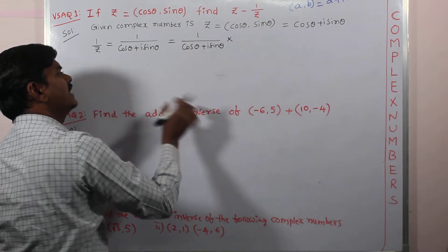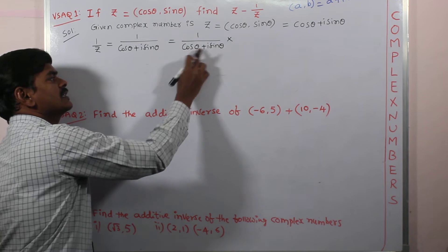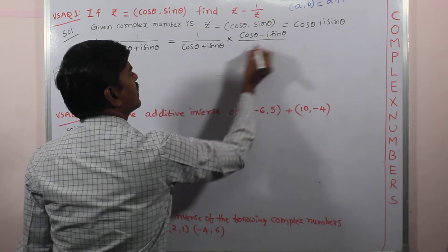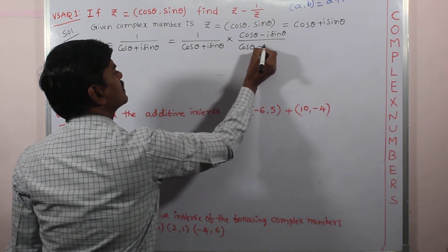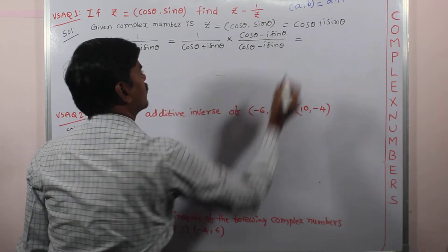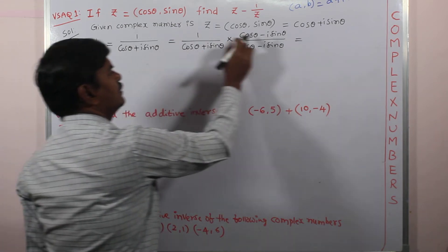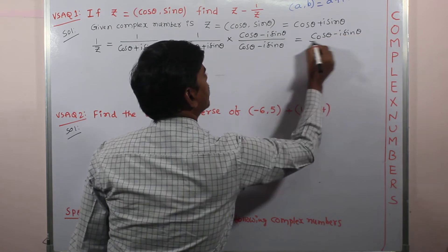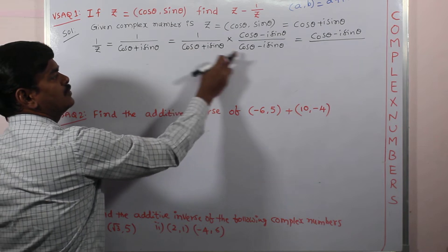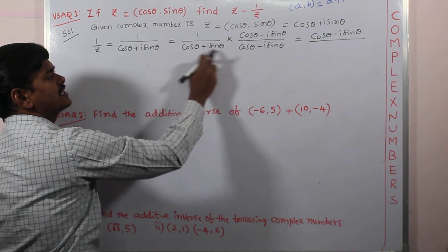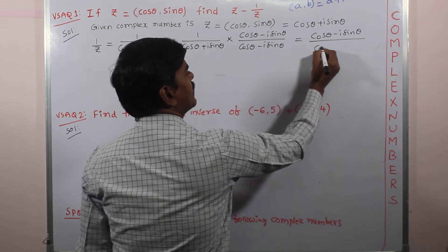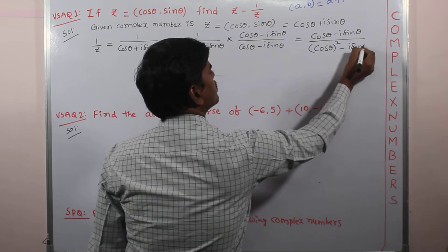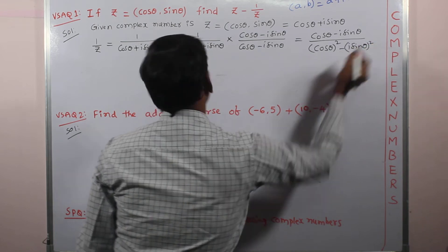Multiplying and dividing by its conjugate. The conjugate of cos theta plus iota sin theta is cos theta minus iota sin theta. So multiplying and dividing by cos theta minus iota sin theta. Then 1 into cos theta minus iota sin theta, divided by the denominator using the formula a plus b into a minus b equals a squared minus b squared.